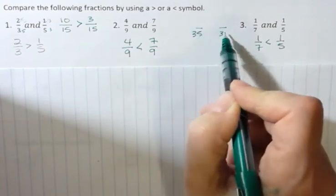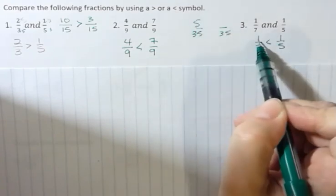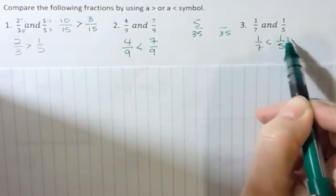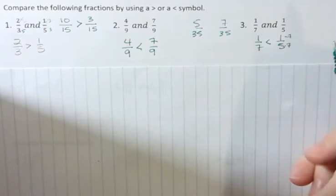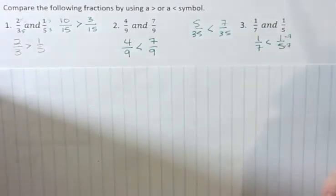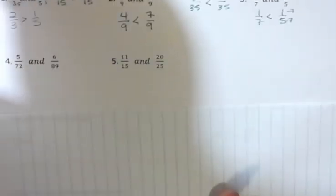But what's the common denominator here? It would be thirty-five. Seven times five is thirty-five, so one times five is five. Five times seven is thirty-five, so one times seven is seven, and you can see that seven is bigger than five. Again, I could have done it that way to compare, but just using your brain is also nice without doing any calculations.